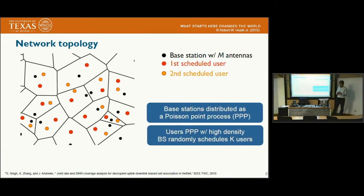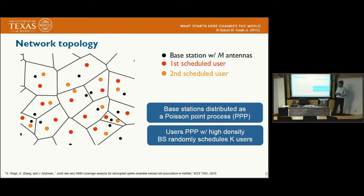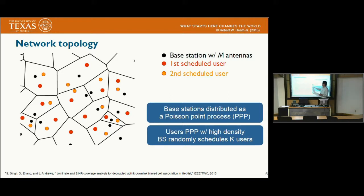Now I want to introduce the network topology in our work. We consider base stations distributed as a Poisson point process, and the mobile users have only one antenna and are densely located in the plane, such that in each cell a base station can always find K users to schedule in one resource block. In the figure, we show the base stations as black dots and users as red and yellow dots. For example, in this figure, we show that in each cell the base station serves two users. We only draw the scheduled users in this plot; there are many users in the cell which are not scheduled.